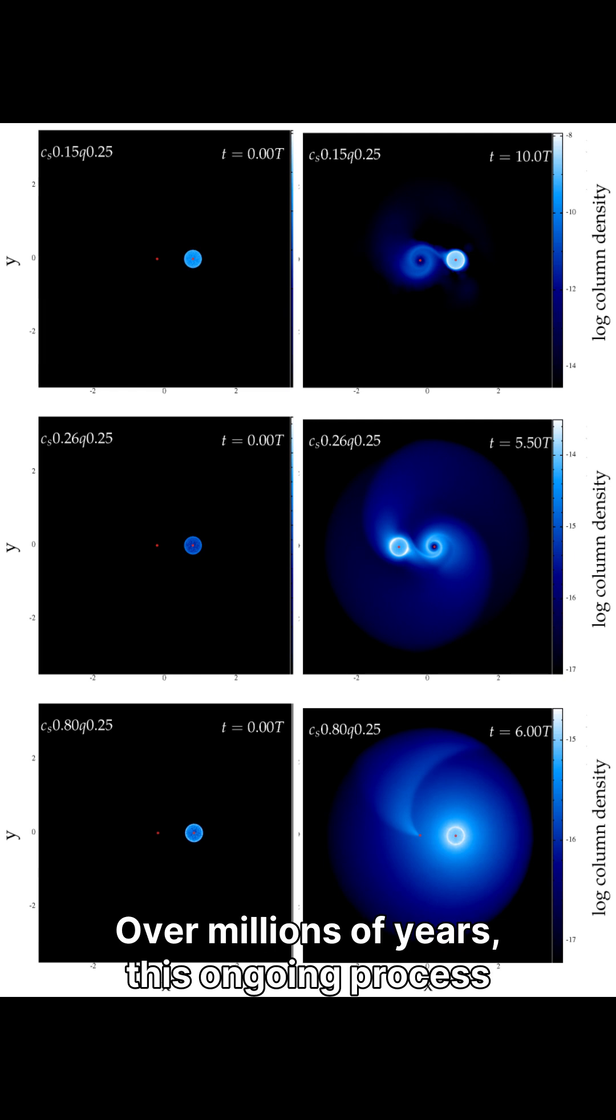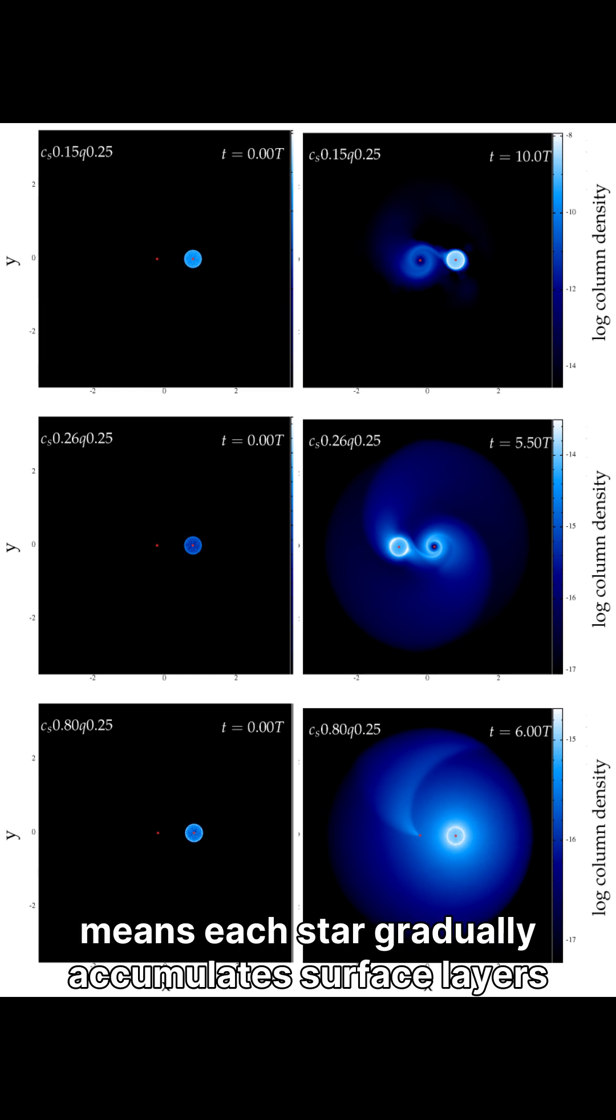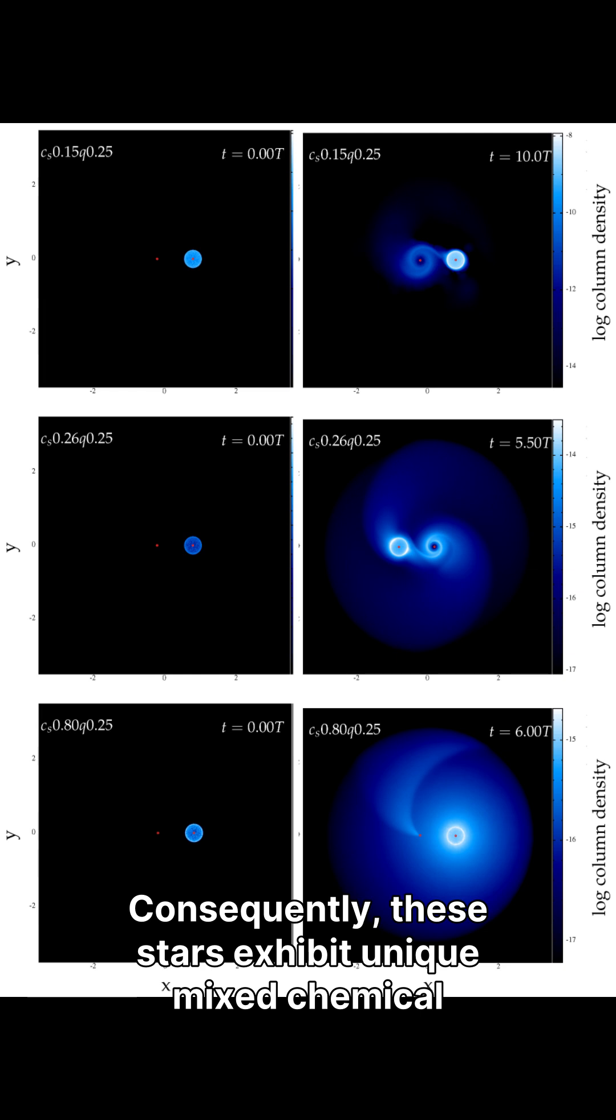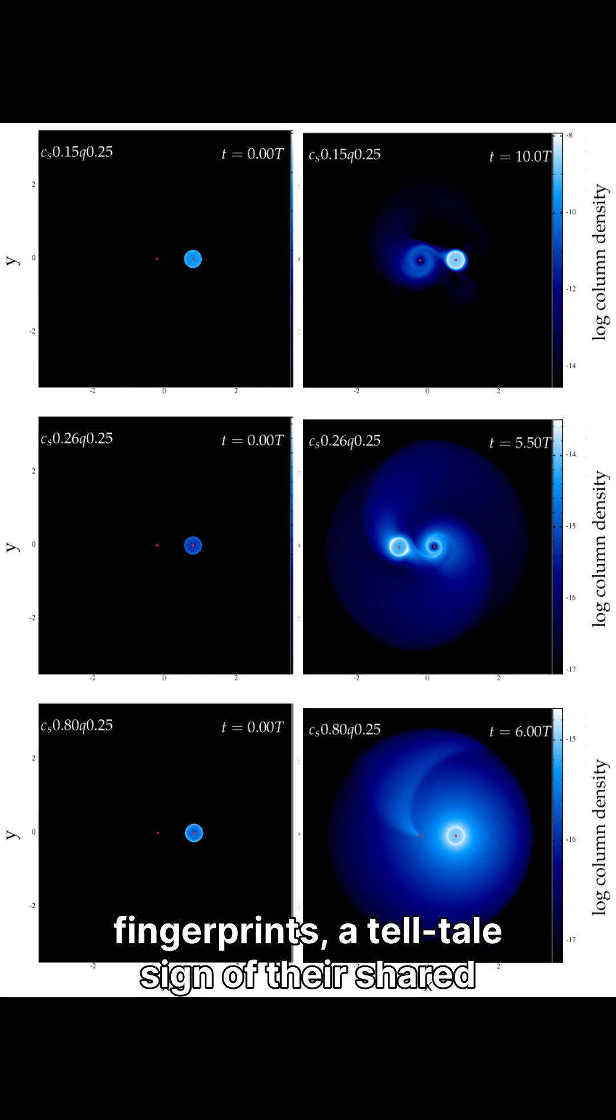Over millions of years, this ongoing process means each star gradually accumulates surface layers originally belonging to its companion. Consequently, these stars exhibit unique mixed chemical fingerprints, a telltale sign of their shared history.